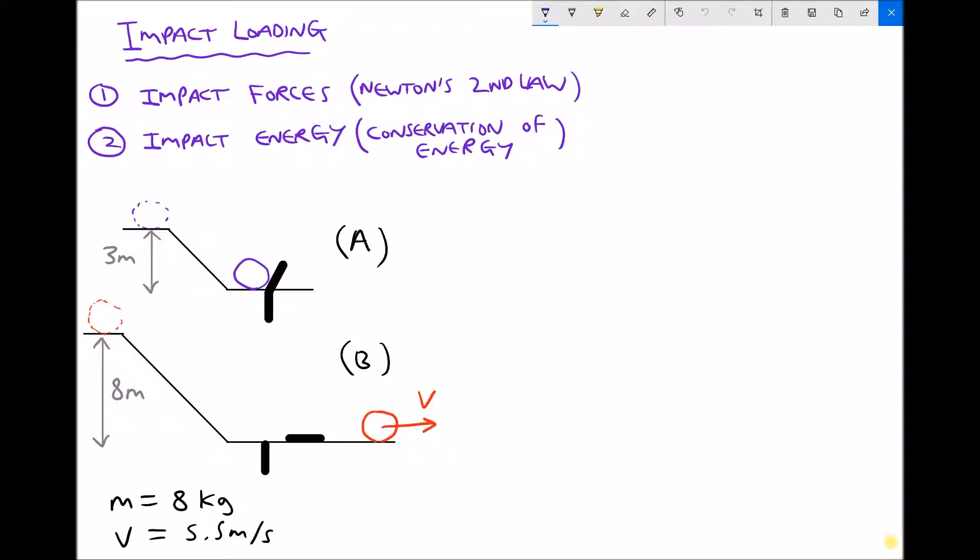Yes it becomes deformed but it's capable of absorbing all of the impact energy that's been supplied to it. In scenario B a similar mass has fallen a distance of 8 meters striking the test piece and in this case the test piece is ruptured and the object has continued moving off with a velocity of 5.5 meters per second.